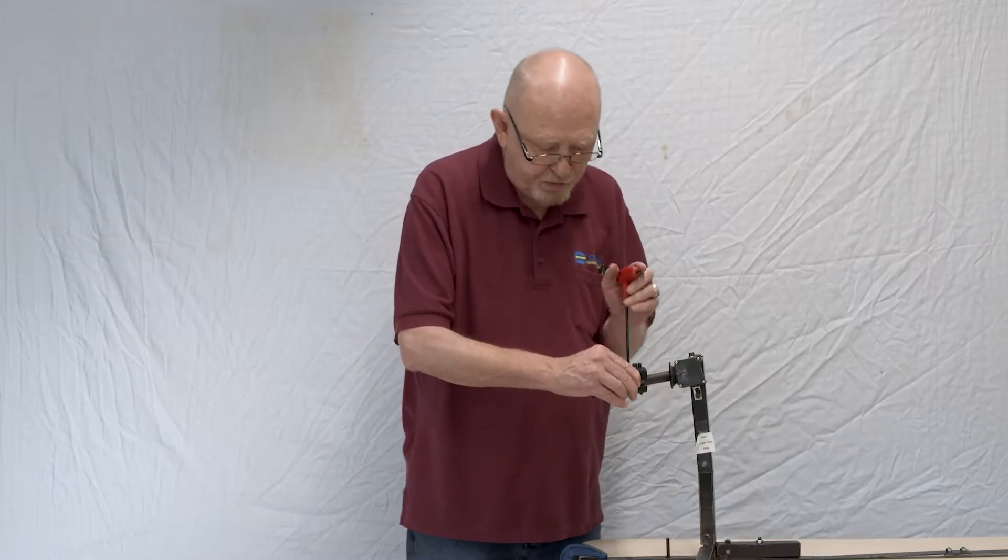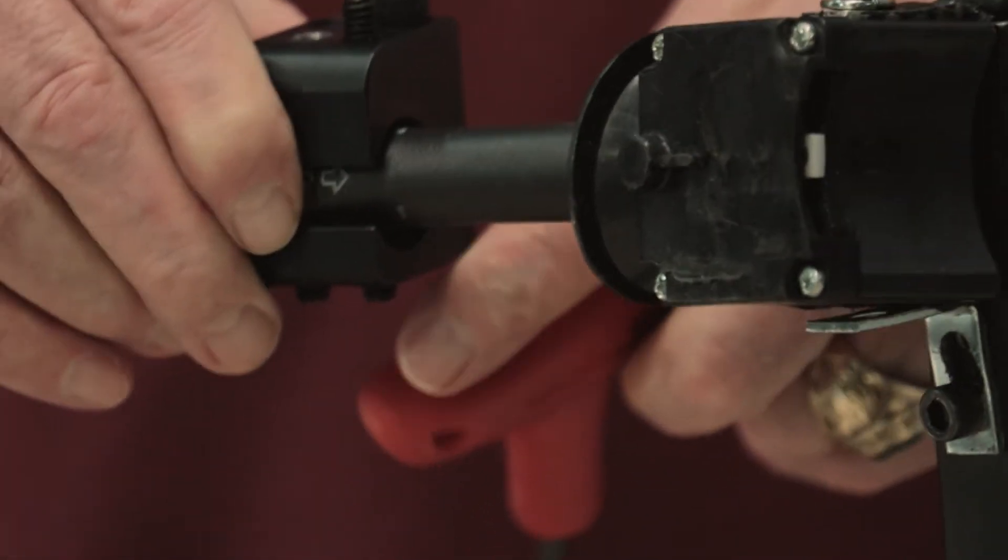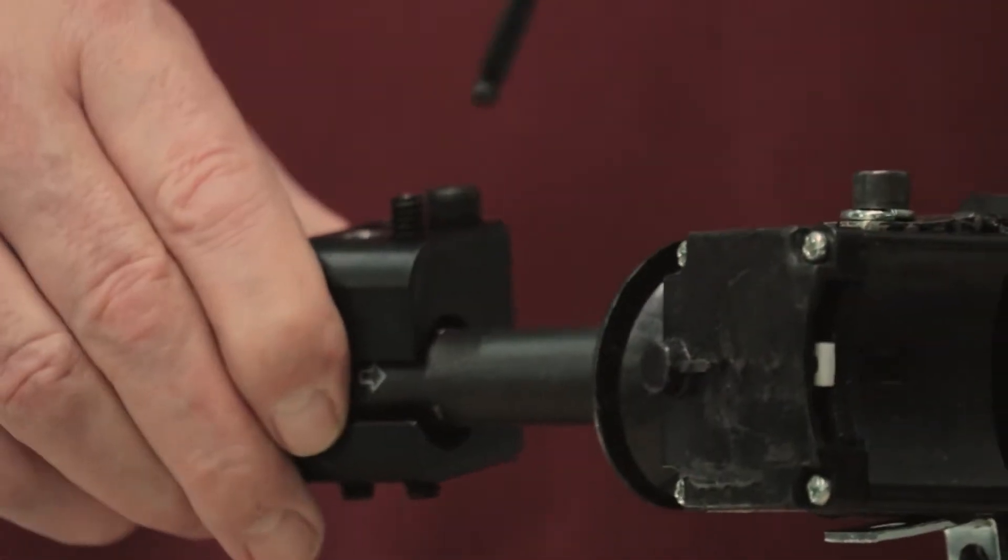First thing you do is tighten up the outside cap screw. You don't have to twist it off. You just tighten it up.